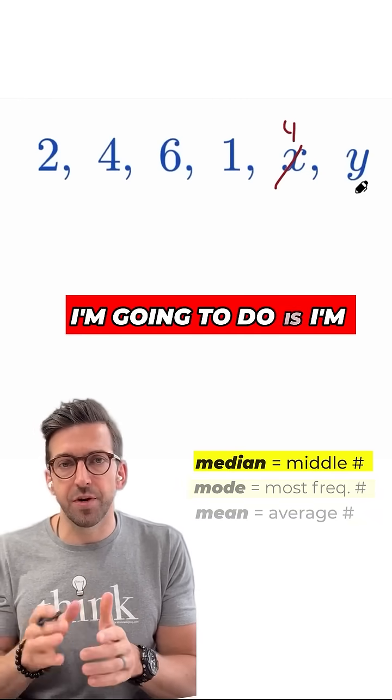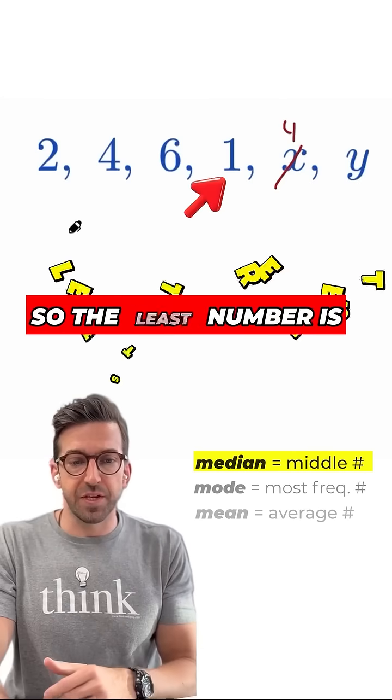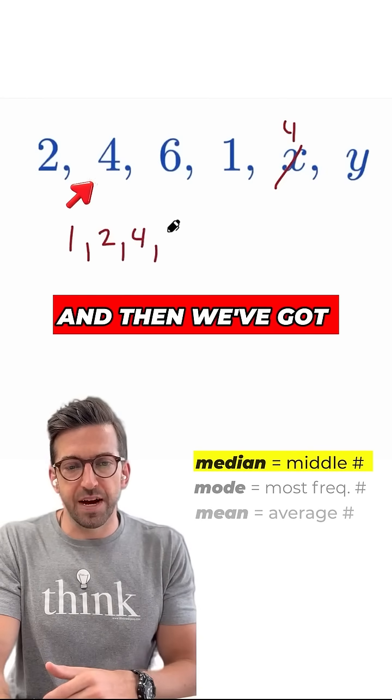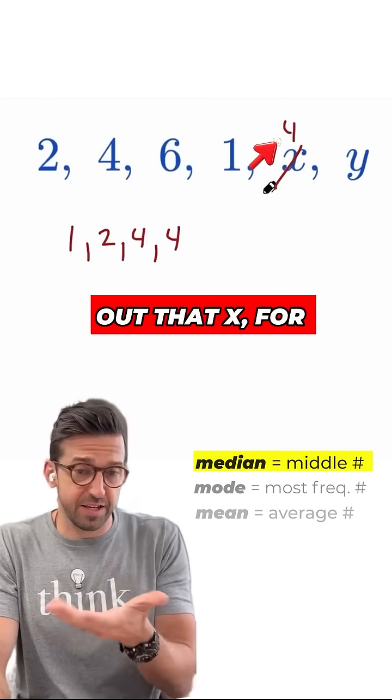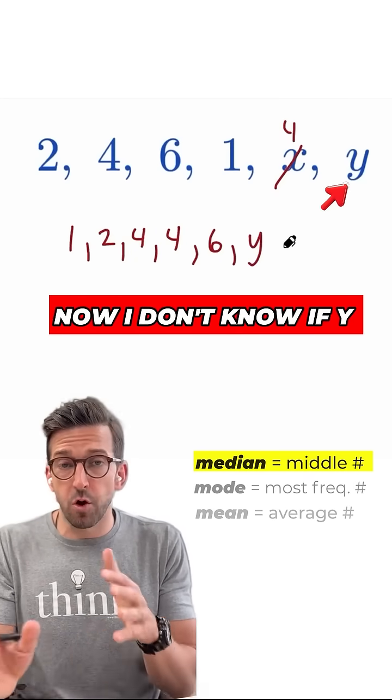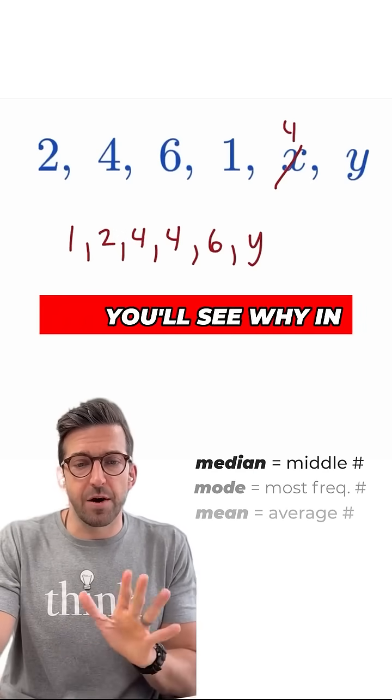Now, the next thing I'm going to do is I'm going to arrange my numbers from least to greatest because that's going to help me think through this other information. So the least number is one, and then we've got two, and then we've got four, and then we've got the new four because we figured out that x, for example, is four. And then we've got a six, and then we've got a y. Now, I don't know if y is bigger than six or less than six, but I'm just going to write them this way for now, and you'll see why in a second.